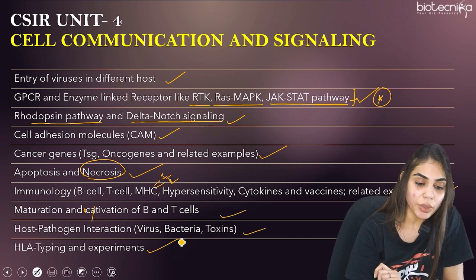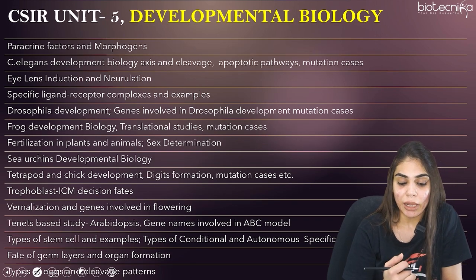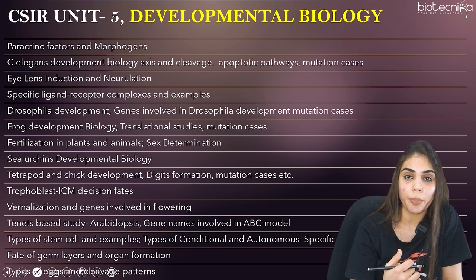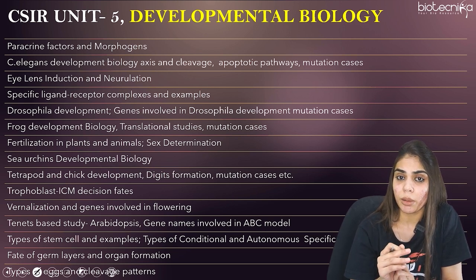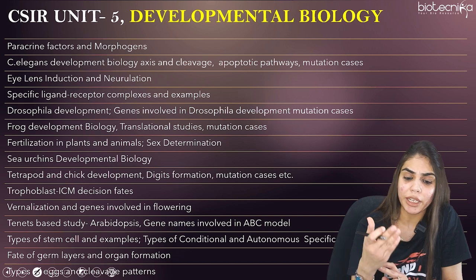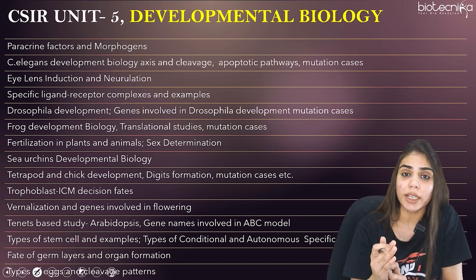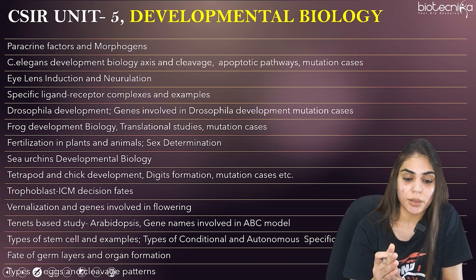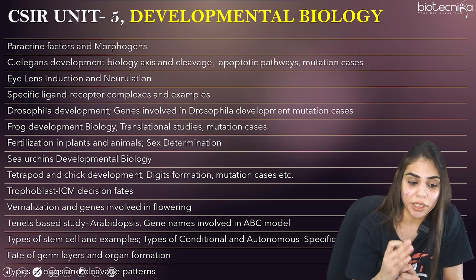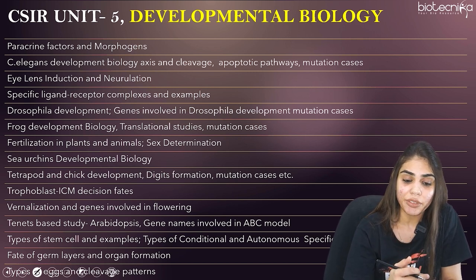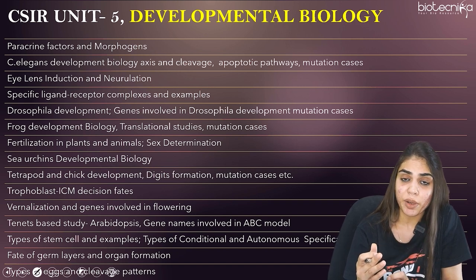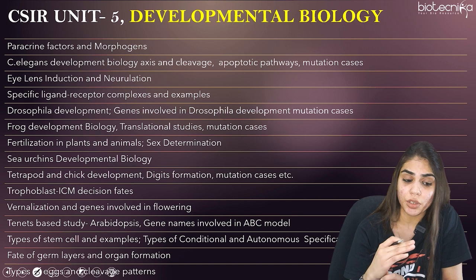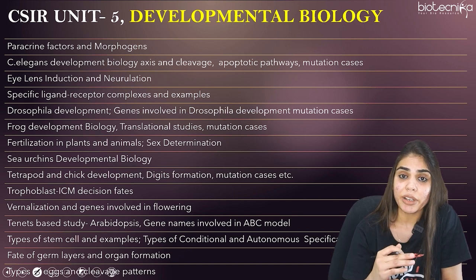Coming to Unit 5, Developmental Biology. There are many topics, and each is important — you can expect questions from any of them, so do not leave this unit. The first topic is paracrine factors and morphogens. Although it seems simple, it is very important. Know the examples of paracrine factors — a direct question may ask which option is not a paracrine factor.